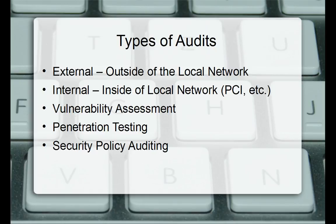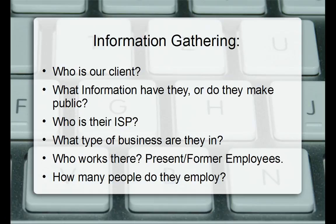In the information gathering phase, you want to find out who your client is, what business they're in, and what information they make public. Check their website — you'd be surprised what companies put out there. They'll list email contacts for everyone inside the company, which makes social engineering easy. They'll list their address, telephone numbers, fax lines — all things you should be writing down.